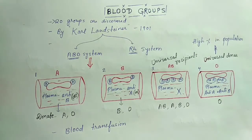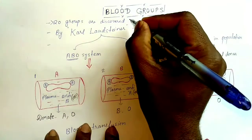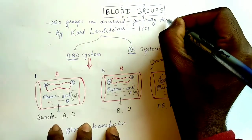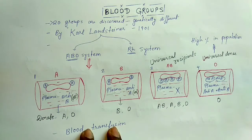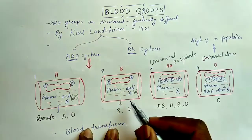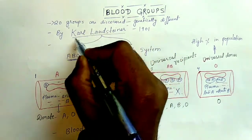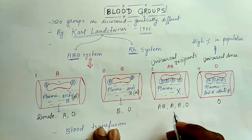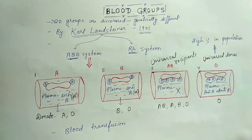Hello friends, I am Nagaj and today we will study about blood groups. Till now 20 groups of blood have been discovered which are genetically different, but we have to study only two systems: one is the ABO system and the second is the Rh system. These two blood group systems were discovered by Karl Landsteiner, a scientist, in 1901. These two systems are worldwide used in clinical practice, so they are more important than the other groups.